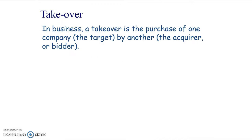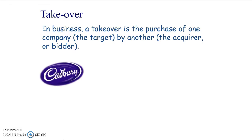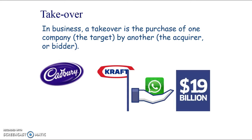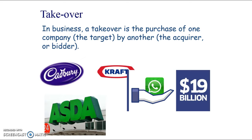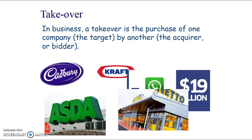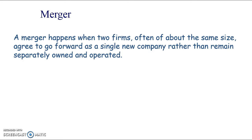Now looking at inorganic or external growth: a takeover is when one business purchases another. Examples include Cadbury's being purchased by Kraft, Facebook taking over WhatsApp for 19 billion dollars, and Walmart/Asda taking over Netto - so the Netto brand disappeared. A merger is similar but it's usually when two firms come together and decide to operate as one, so it's less about one firm buying another and more about them jointly operating together.